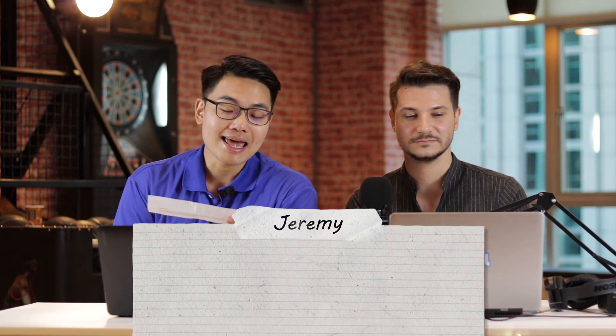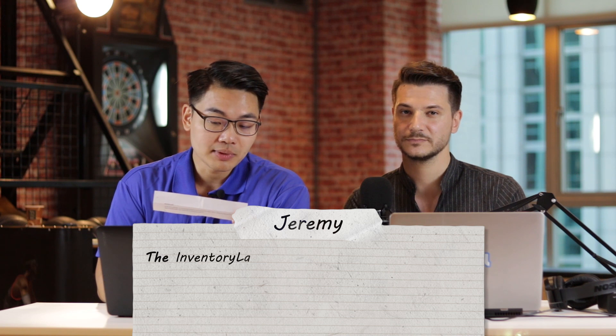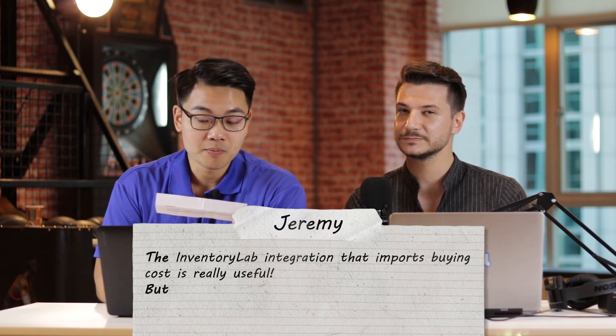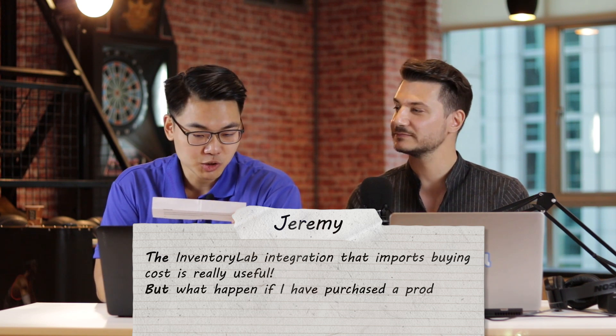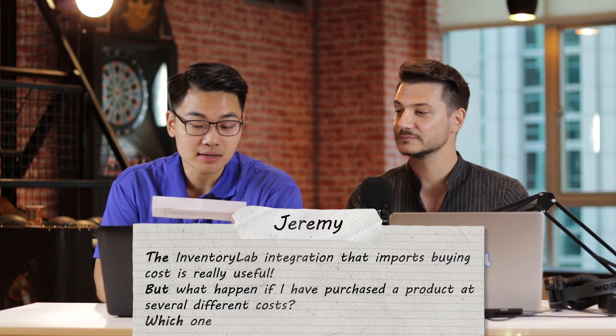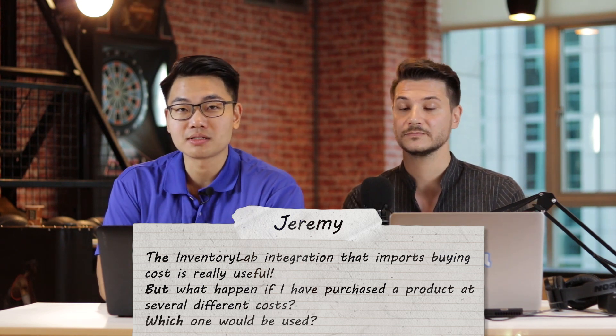So Jimmy, I'm gonna give you the honor of picking the first question. Lovely, let's just get right into it. The very first question is asked by Jeremy about Repricing Central. Jeremy asks: the InventoryLab integration that imports buying costs is really useful, but what happens if I have purchased a product at several different costs? Which one will be used?